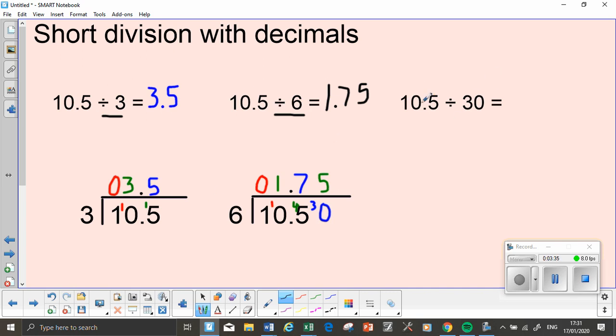And I've put this one on the side, so I've got 10.5 divided by 30. If I know 10.5 divided by 3 is 3.5, I need to divide this then by 10. So if I divide it by 10, I'll get 0.35.